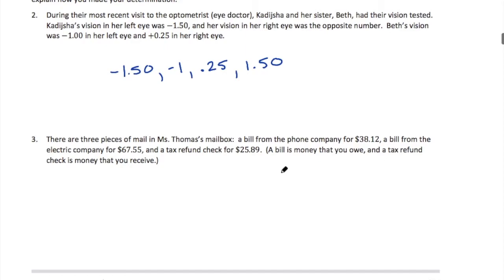Number three: there are three pieces of mail in Mrs. Thomas's mailbox — a bill from the phone company for $38.12, a bill from the electric company for $67.55, and a tax refund check for $25.89. If we think about a bill as money that you owe and a tax refund as money that you receive, owing money is negative and getting money is positive. So she has a negative $38.12.